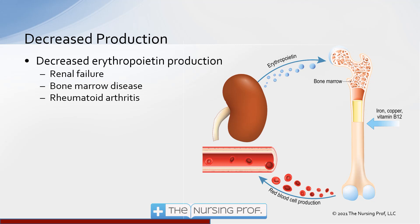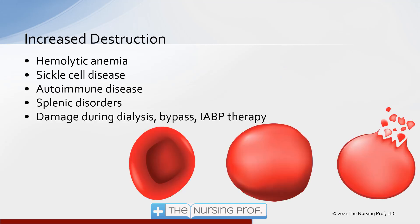In both cases, hypoxia drives the increase in red blood cell production. However, for these mechanisms to work, we need a healthy kidney and healthy bone marrow. Even in a patient who is not an athlete or COPD patient, if there are problems with the kidneys or bone marrow, we can still see a decrease in red blood cell production, which will lead to anemia.